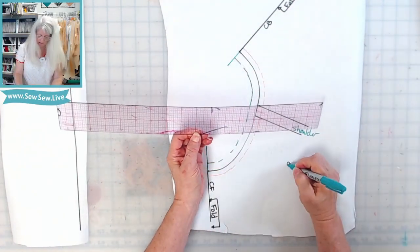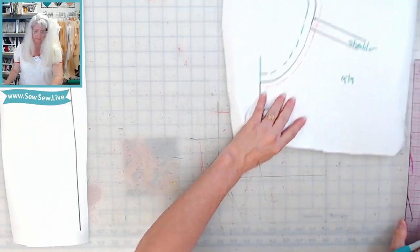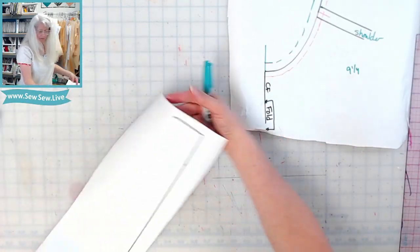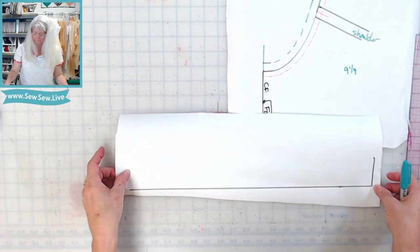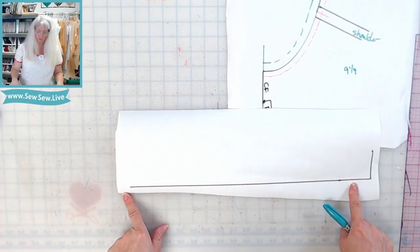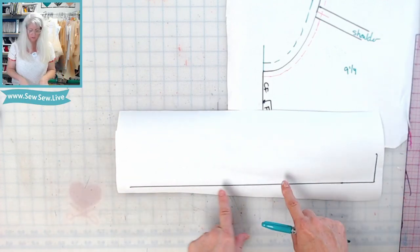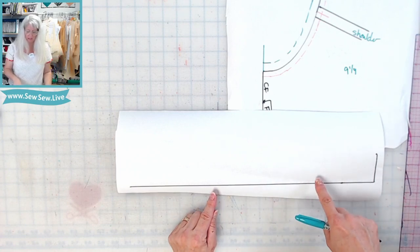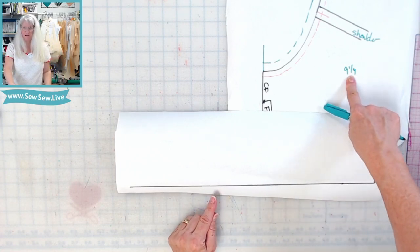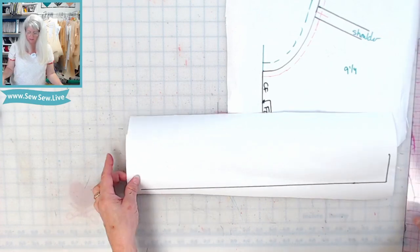All right, and now when you have that measurement, write it down. Now get your piece of paper for your neckband pattern. I've drawn a long straight line here and we're going to make a neckband piece that's this amount here double, because we have the other side of the neckline here.